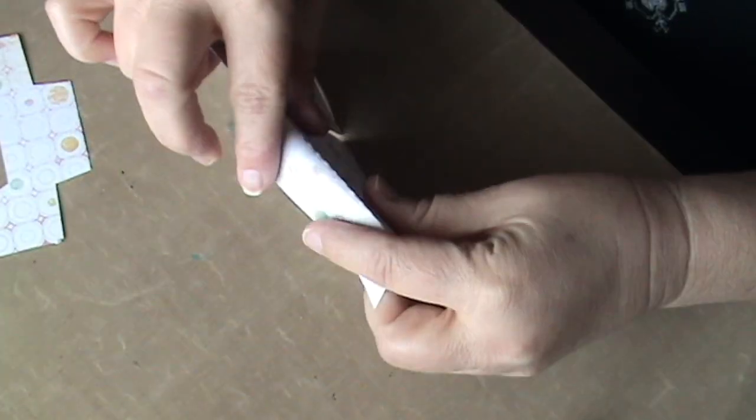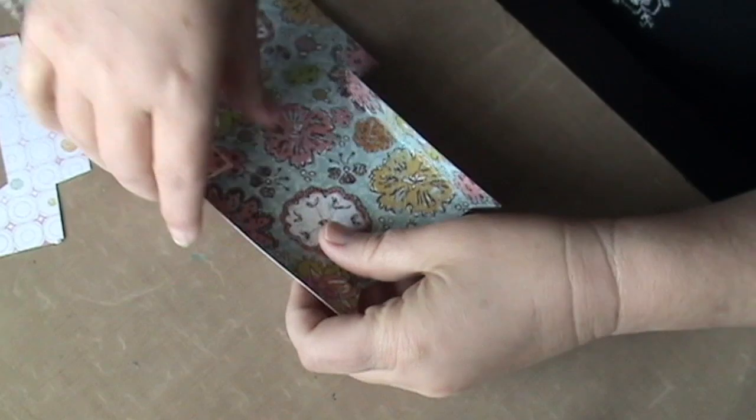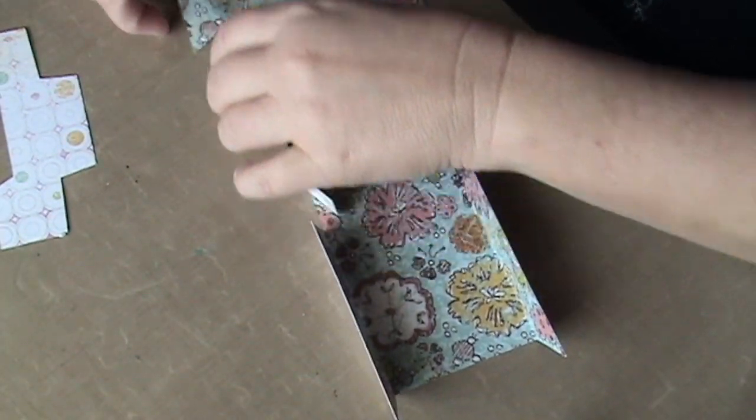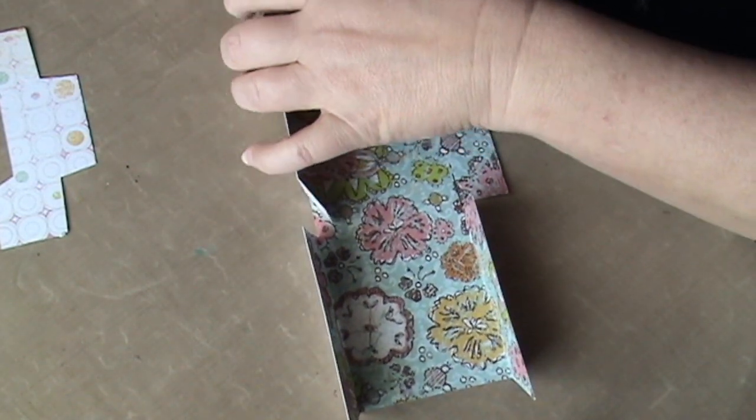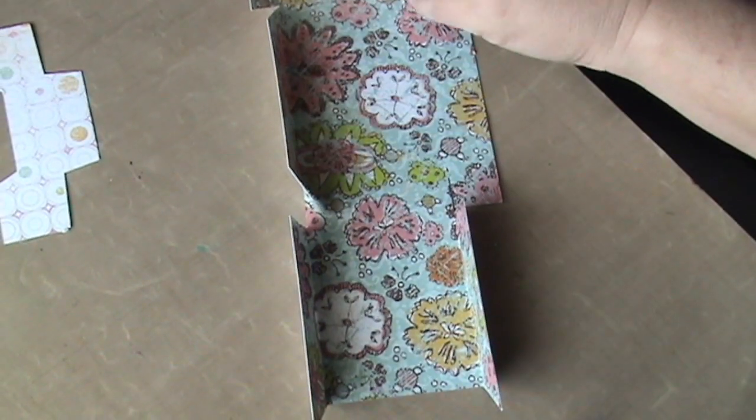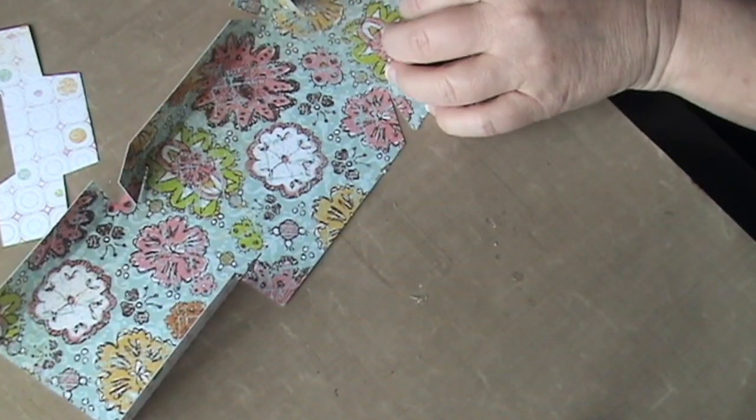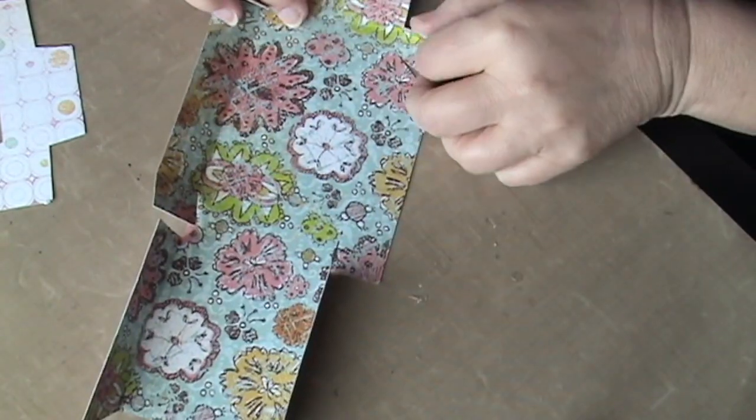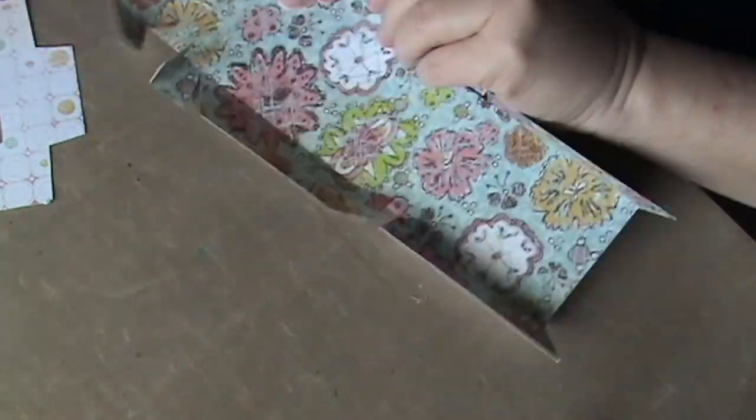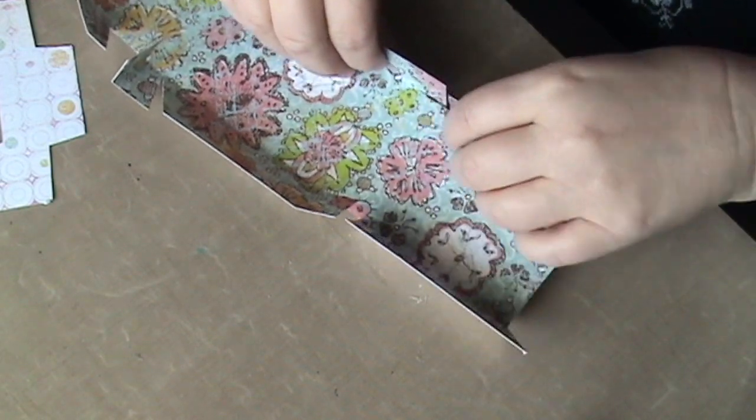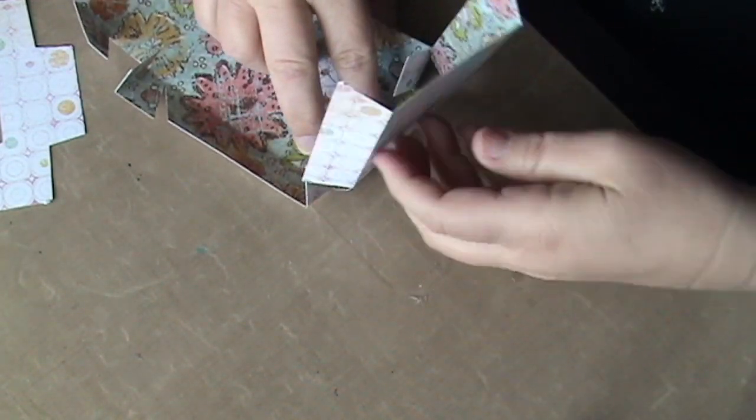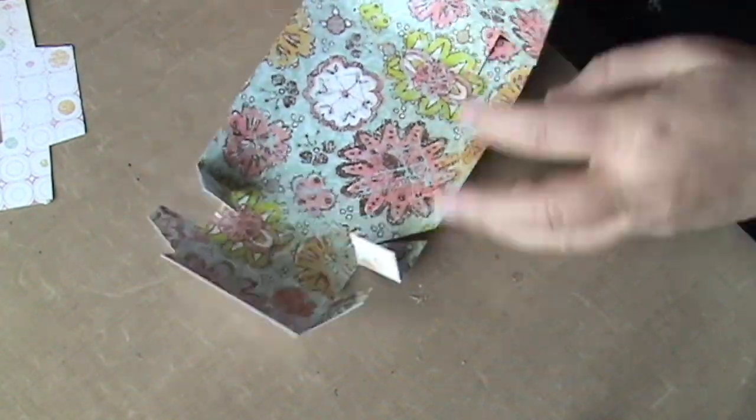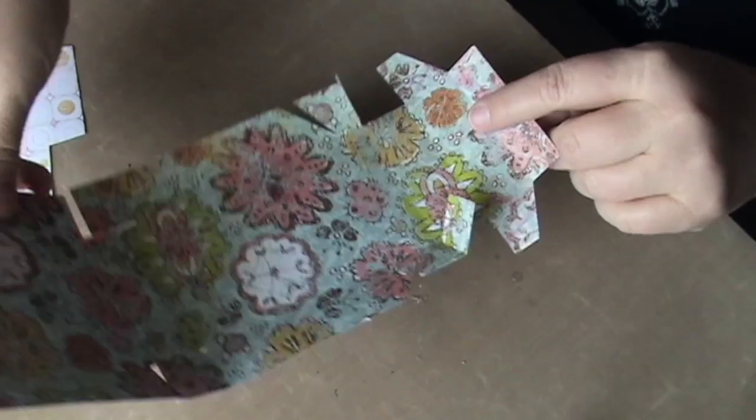So the first thing I do is go ahead and score or fold on the score lines and get all those ready to go, so that when I get ready to glue I'm not trying to brush and fold and glue. So I'm going to fold all of these lines. Sometimes the paper you use makes it hard to see. I've done this a number of times so I think I can almost put it together in my sleep. Okay, so here we go, I got it folded.